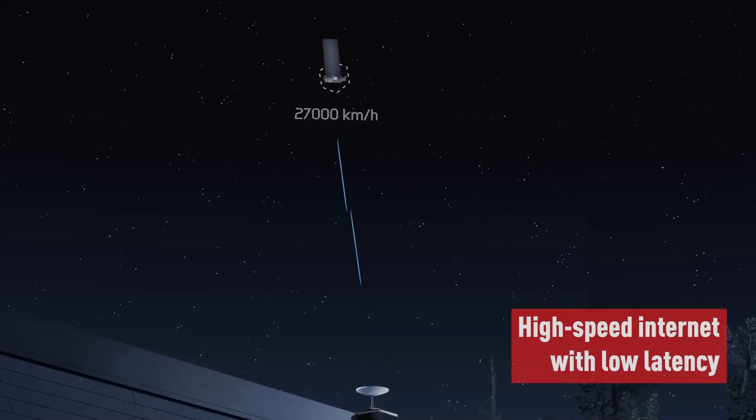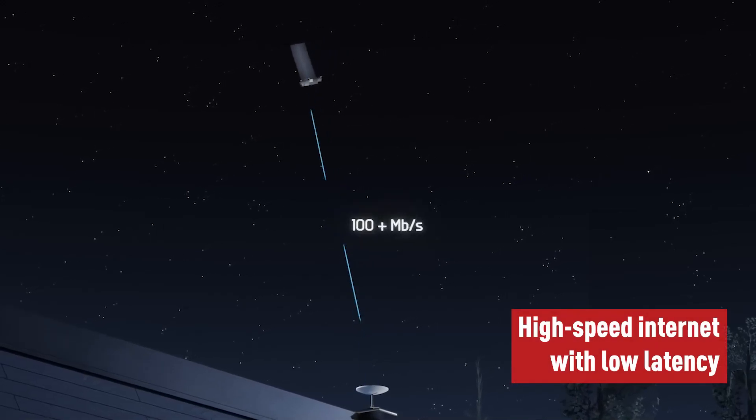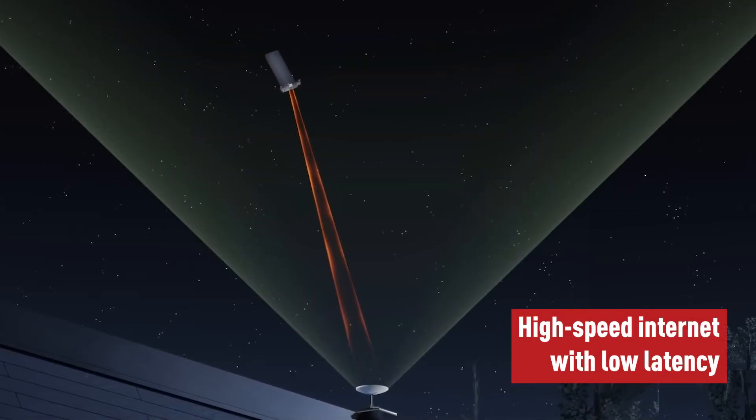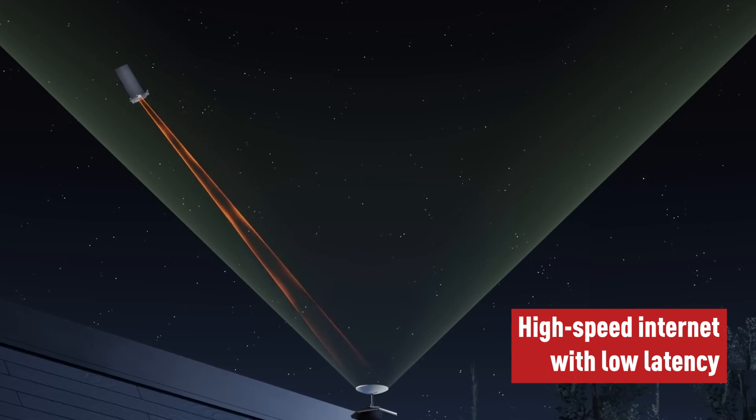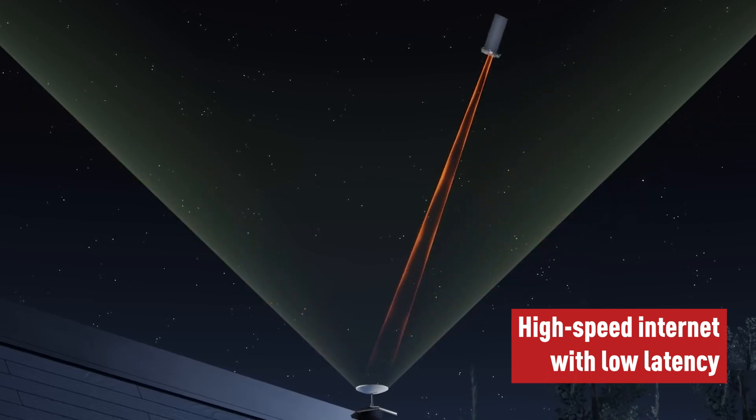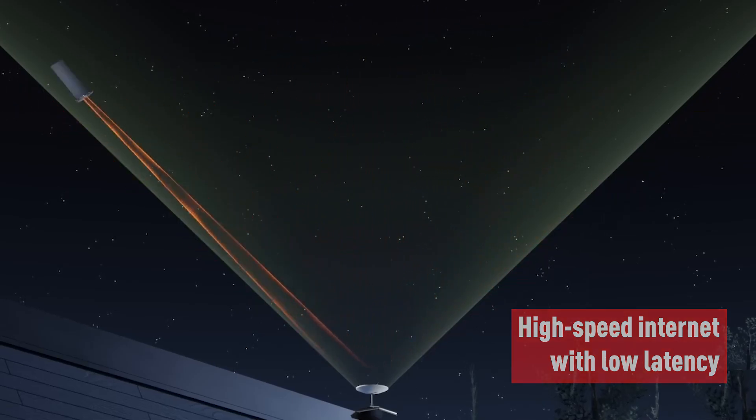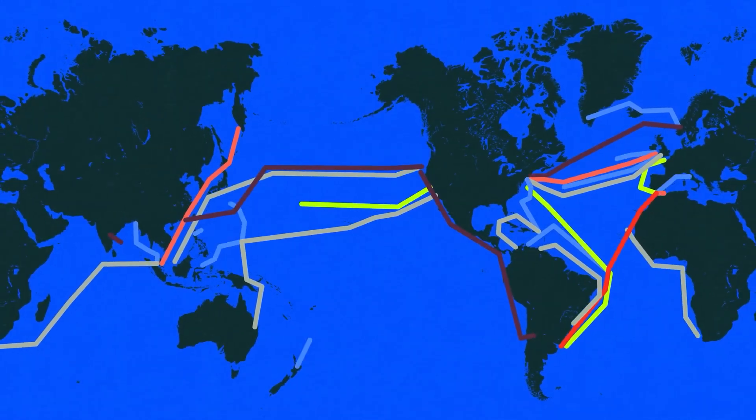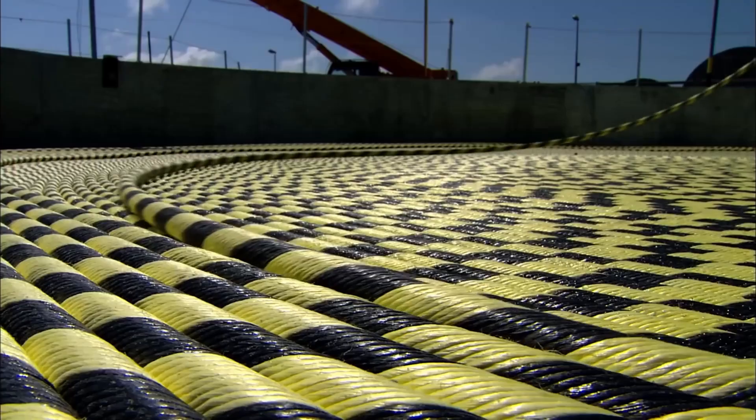This proximity allows Starlink to deliver high speed internet with low latency averaging between 20 to 40 milliseconds and data speeds ranging from 100 to 200 megabits per second. These attributes make it a viable solution for regions where conventional broadband infrastructure is either unavailable or prohibitively expensive.